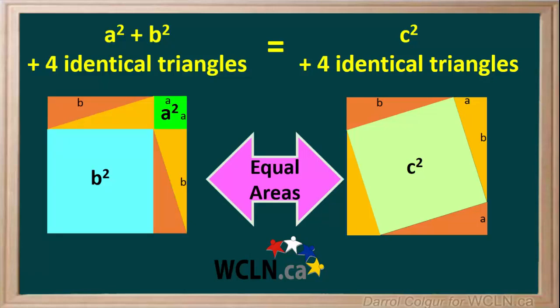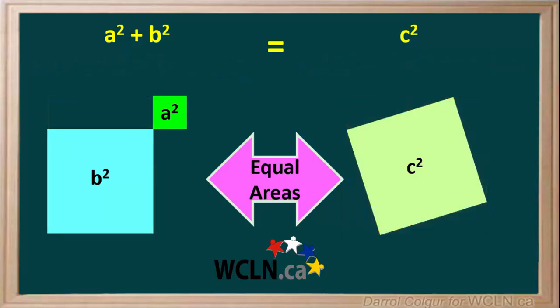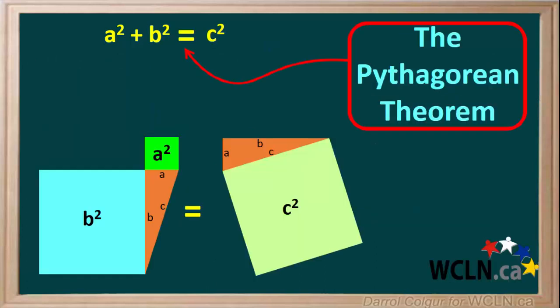So, we have this. When we remove the four identical triangles from both sides, we're left with A squared plus B squared is equal to C squared, which again is the Pythagorean theorem. This proof will work no matter what right triangle we start with.